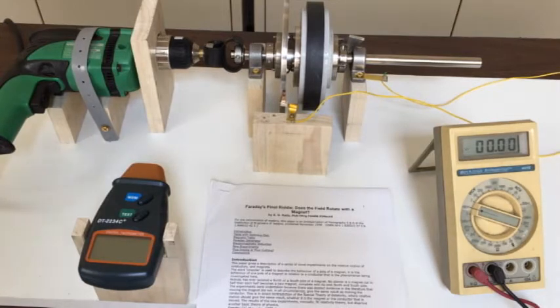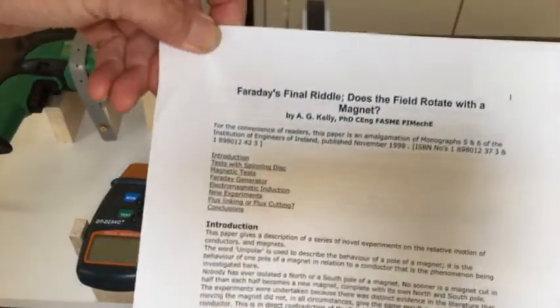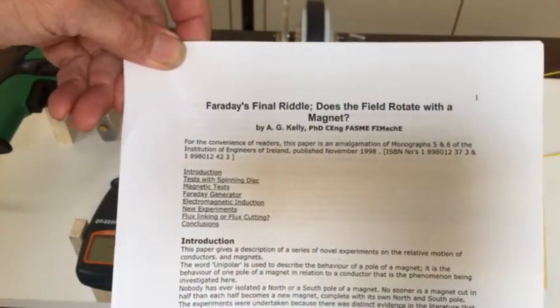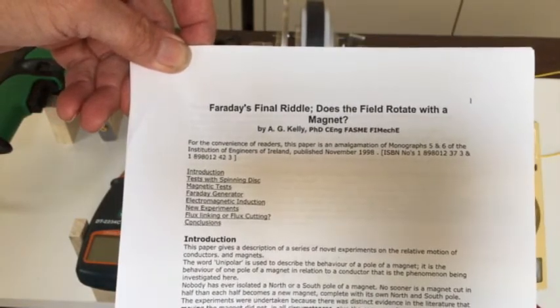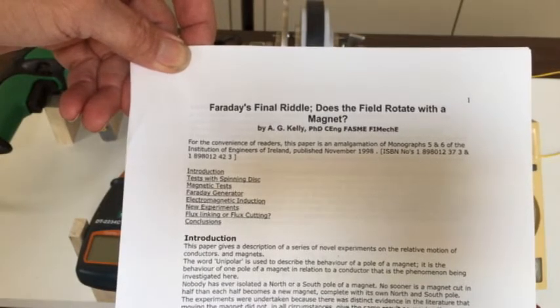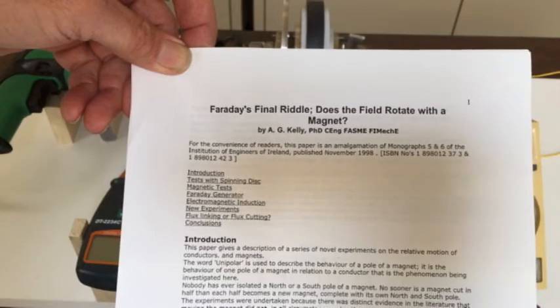A.G. Kelly claims that there were some things that Faraday missed when he did his original experiments. Now the A.G. Kelly paper is here and I've got a copy of this on the website which is given in the bottom of this video. So you can go and get a copy of the paper and also you can see a biography of A.G. Kelly if you so wish.